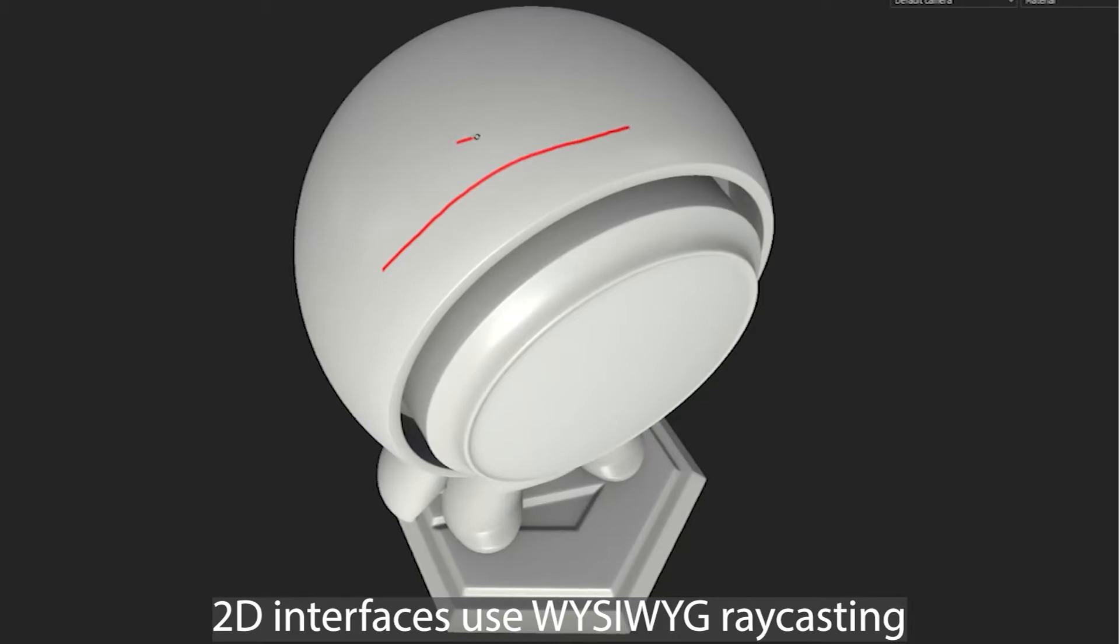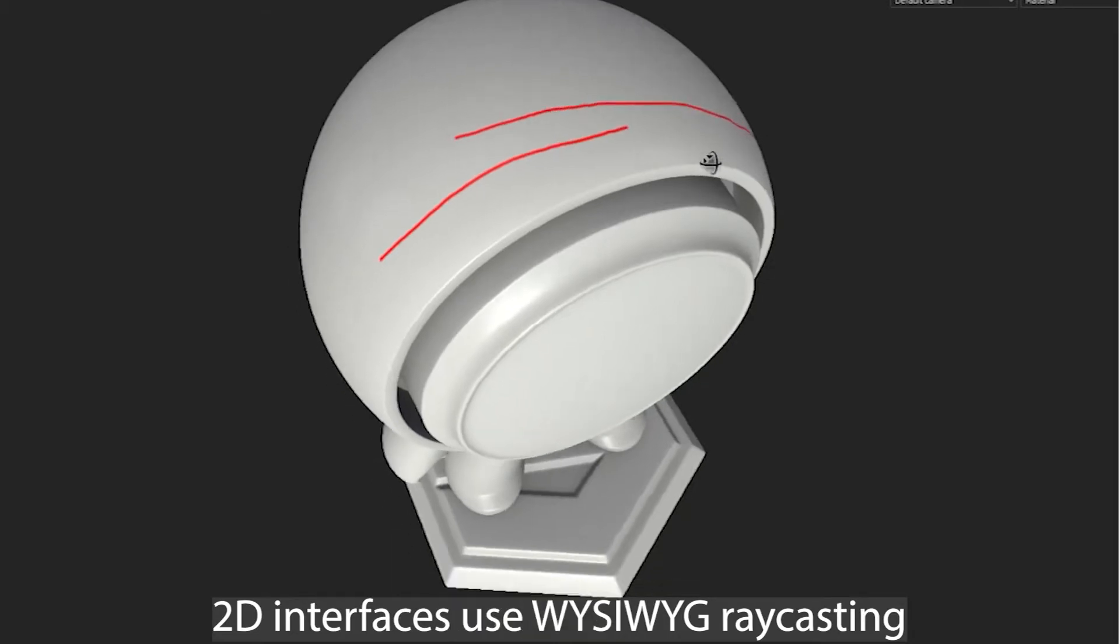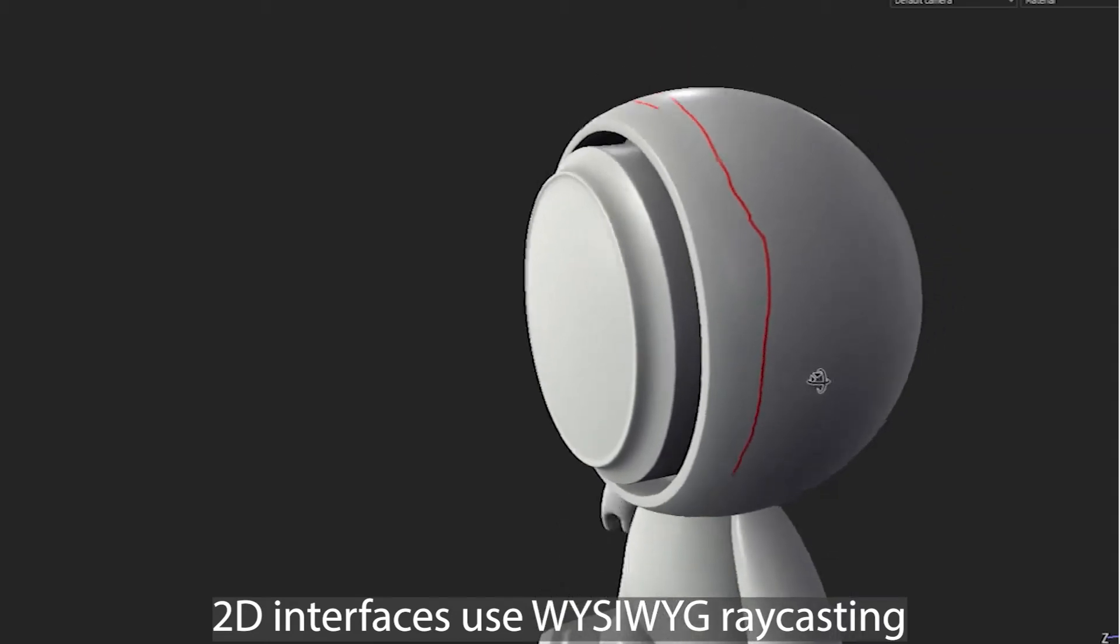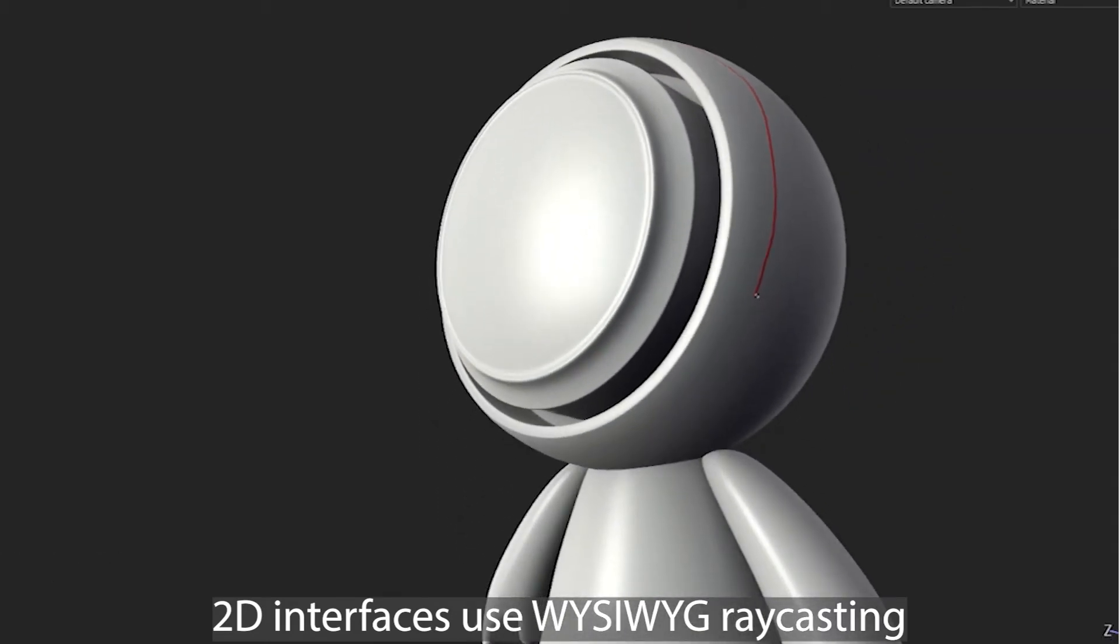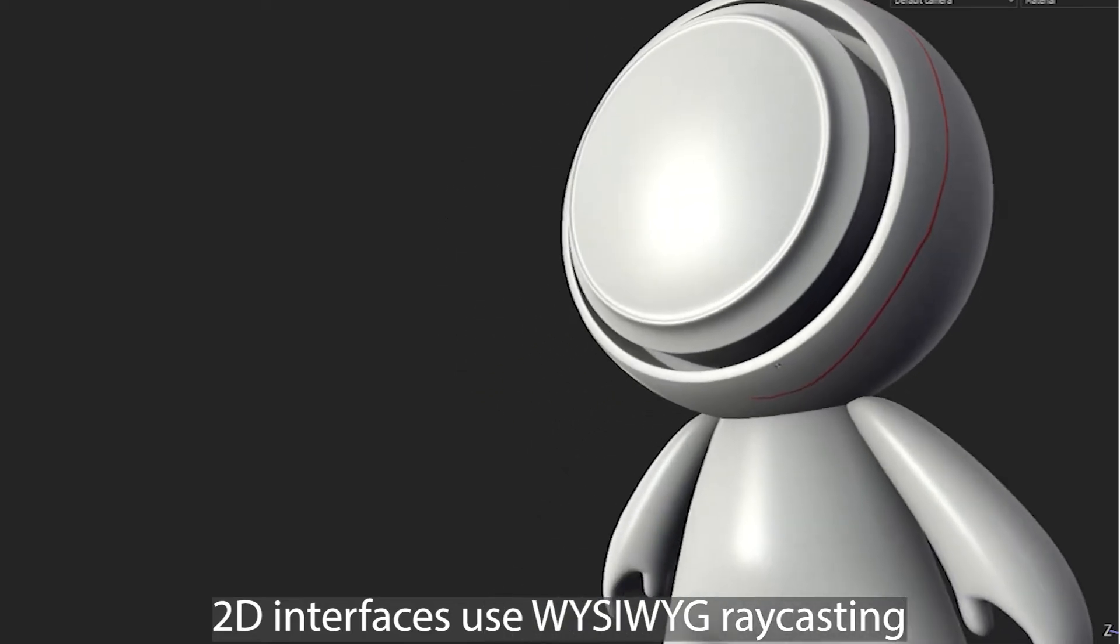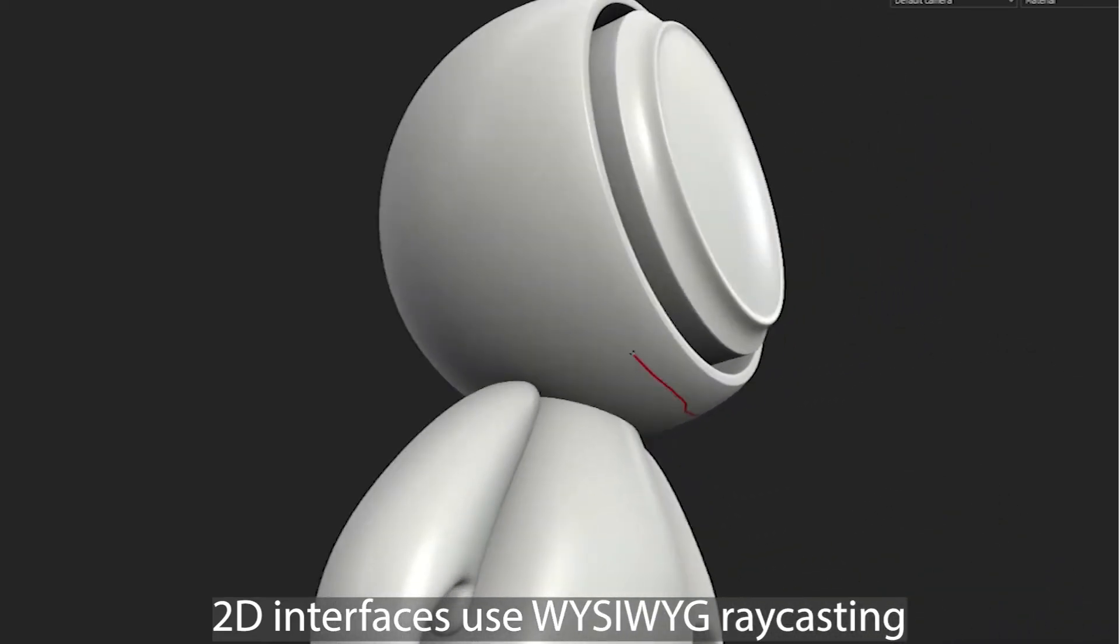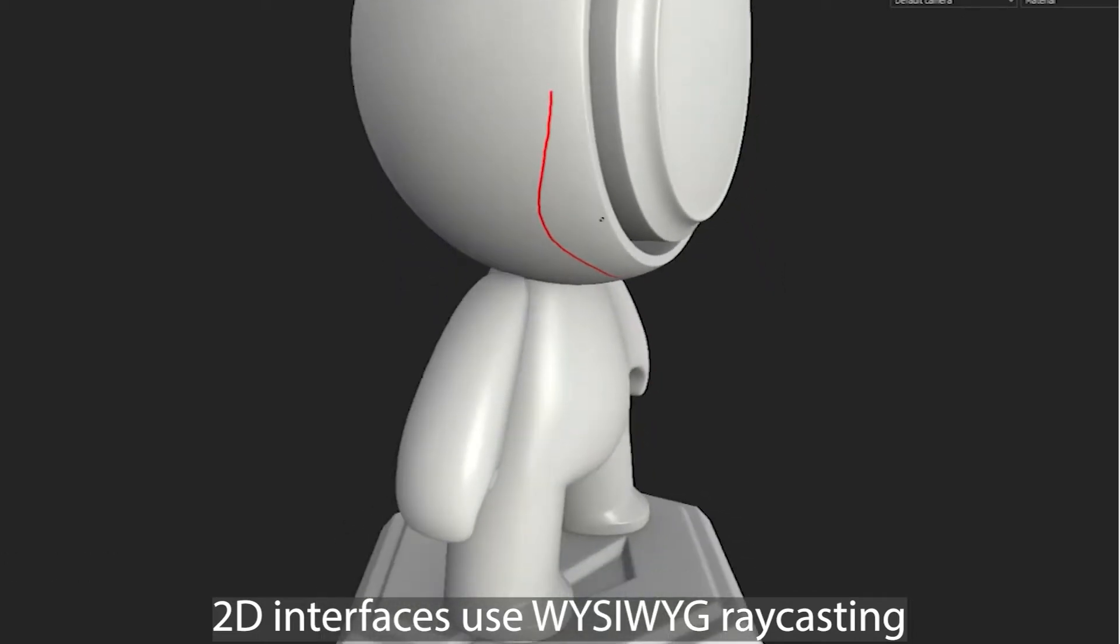We begin by looking at two-dimensional interfaces, where the dominant technique for drawing curves onto surfaces is ray casting in the view direction to project points onto the surface. This projection is context-free, that is, it does not use the history of already drawn points or their projections.